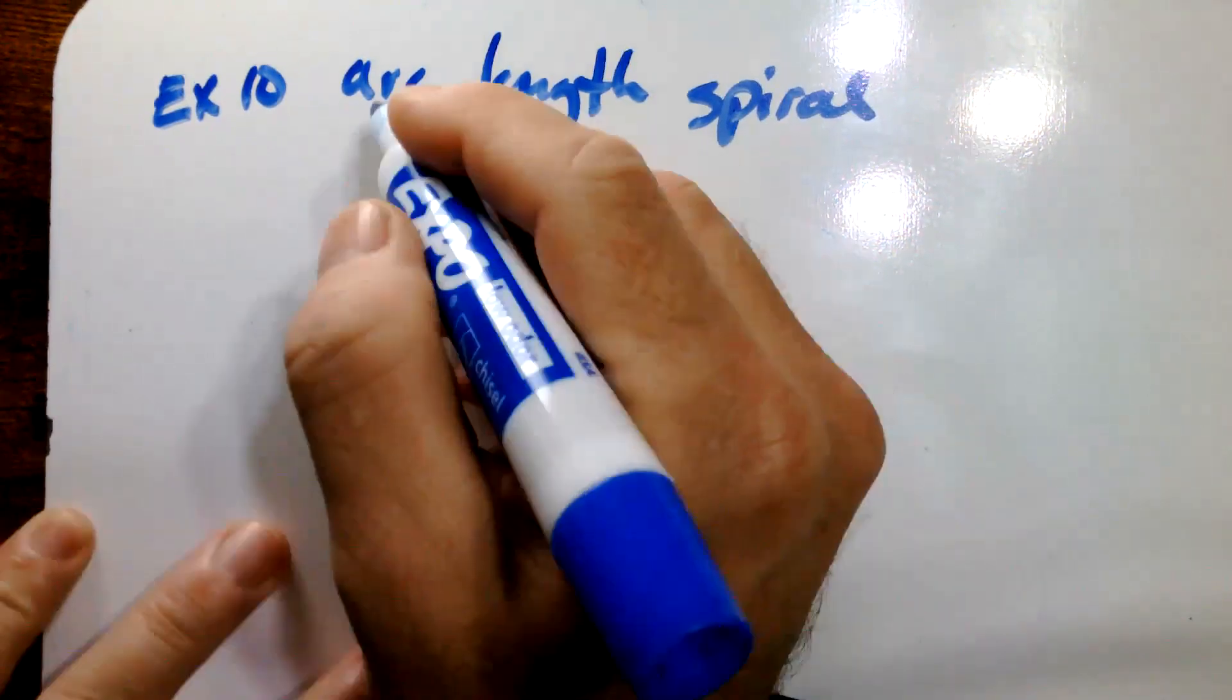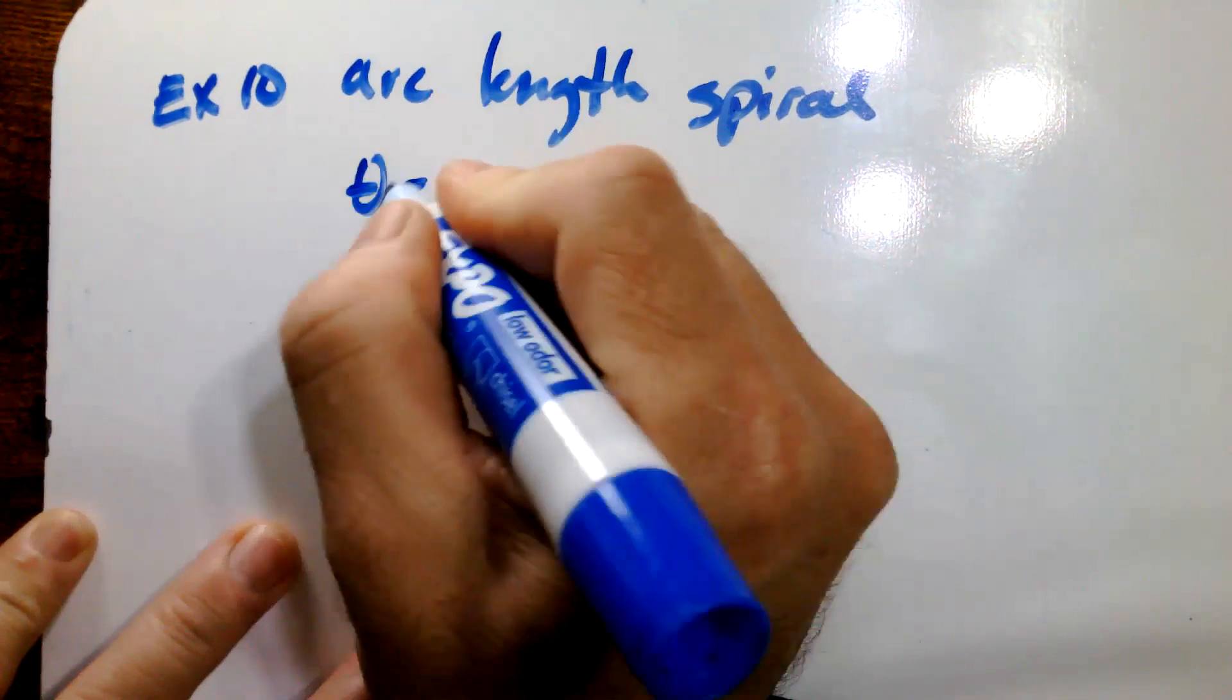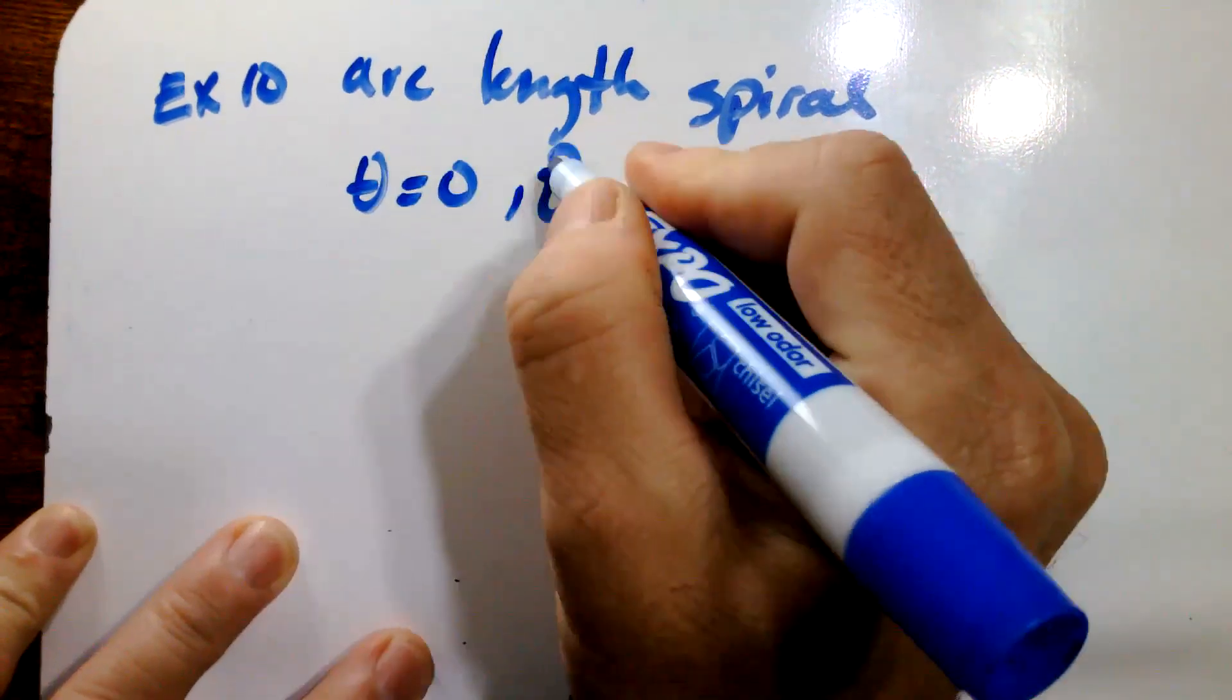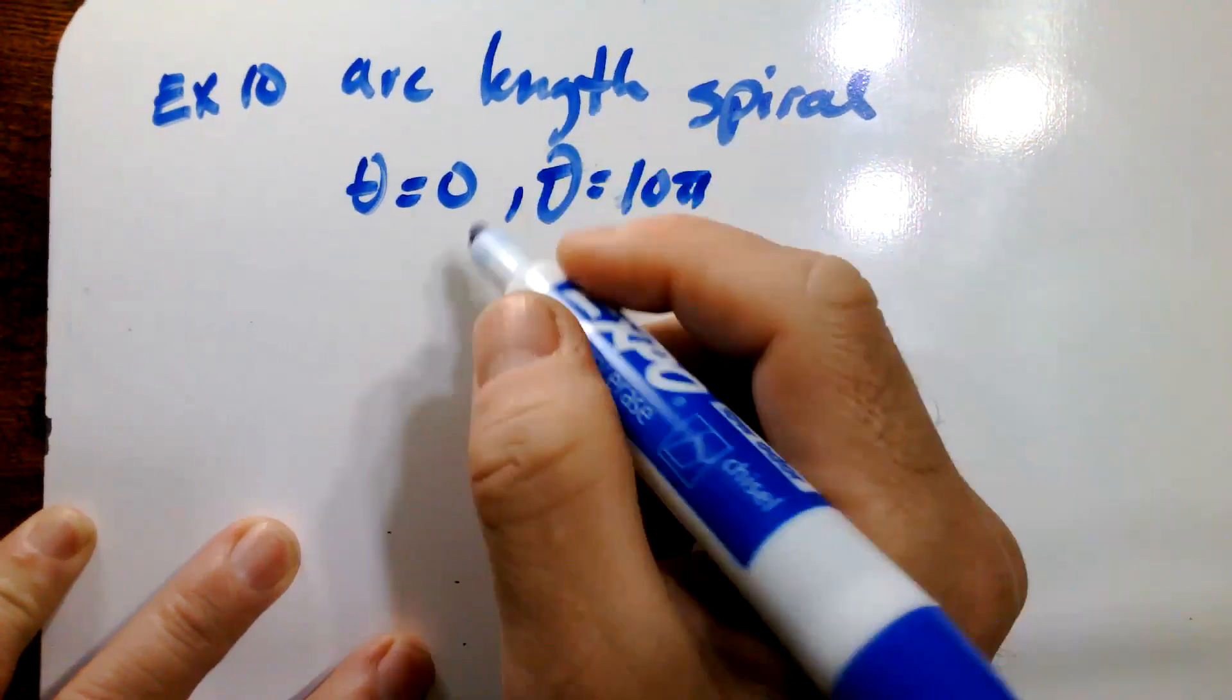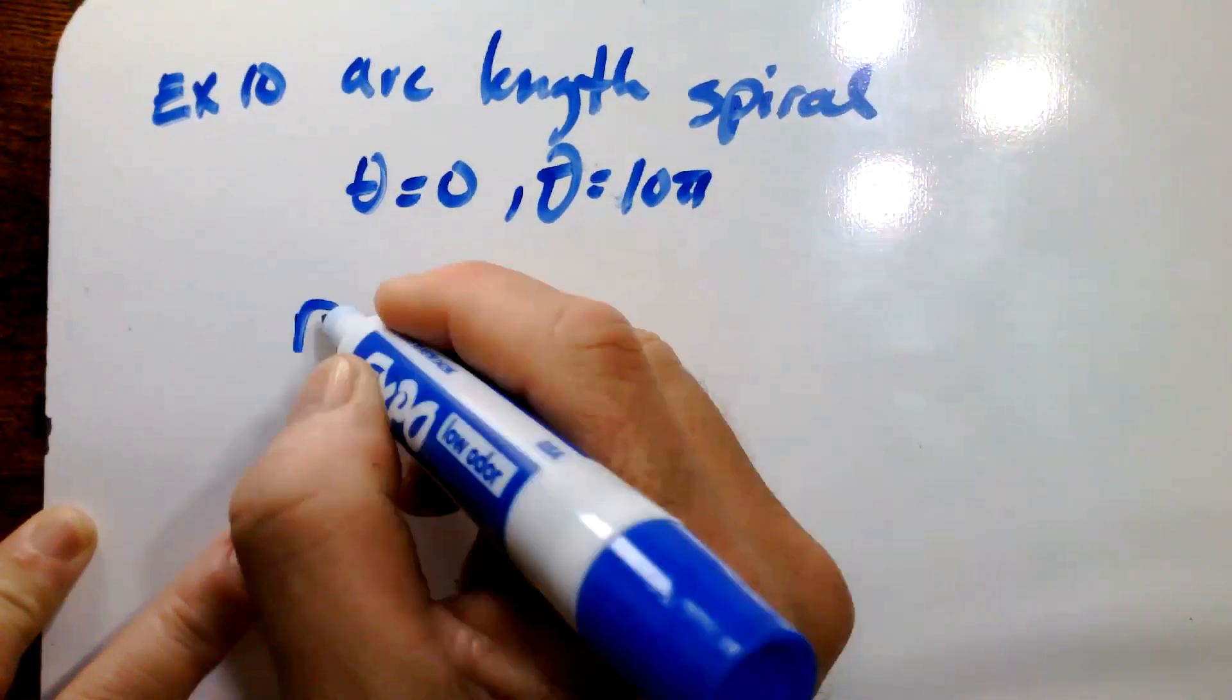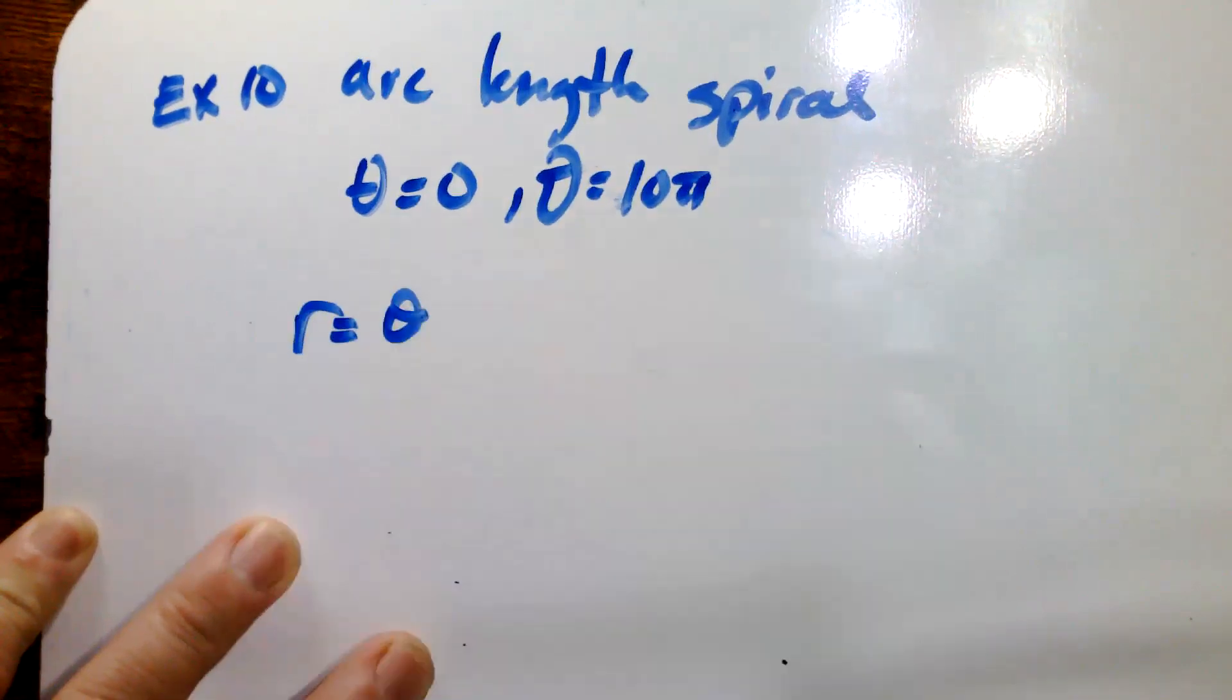The problem sets us up with theta from zero to theta equals 10π. And so for the spiral, we know that r equals theta. That's what creates a spiral.